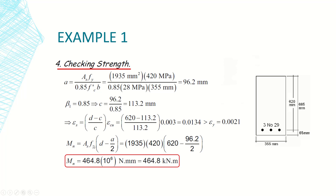The nominal moment M_n can be calculated using either formula. Using M_n = A_s × f_y × (d − a/2), with actual A_s = 1935 mm², f_y = 420 MPa, d = 620 mm, and a = 96.2 mm, I get M_n = 464.8 kilonewton·meters.